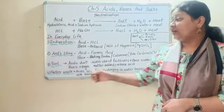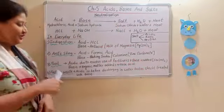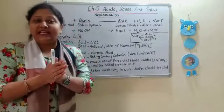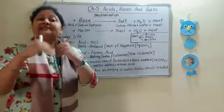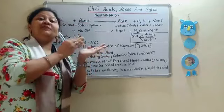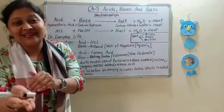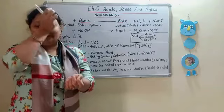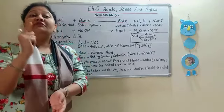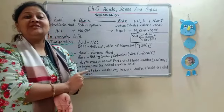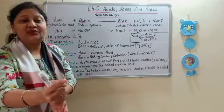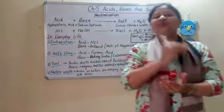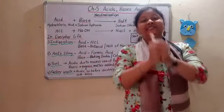The last application of neutralization reaction is factory waste. Factory waste is acidic in nature and when it is discharged into water bodies like lakes and ponds, it is harmful for aquatic life. So we should neutralize the factory waste before discharging it into the water body, which can be done by adding a base.